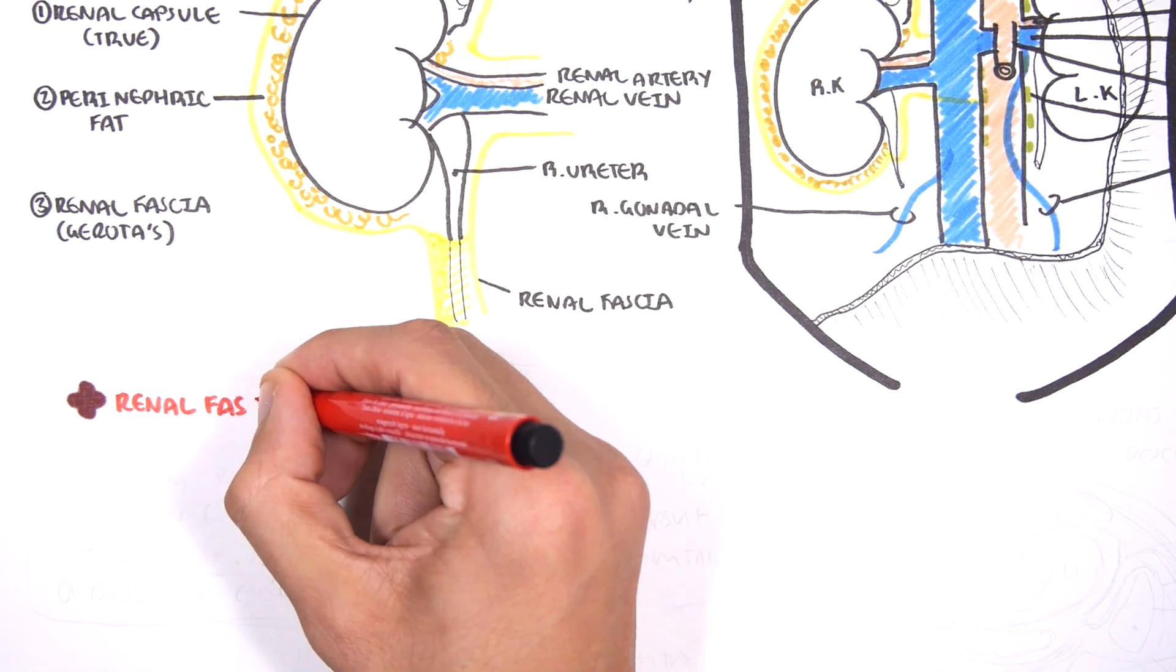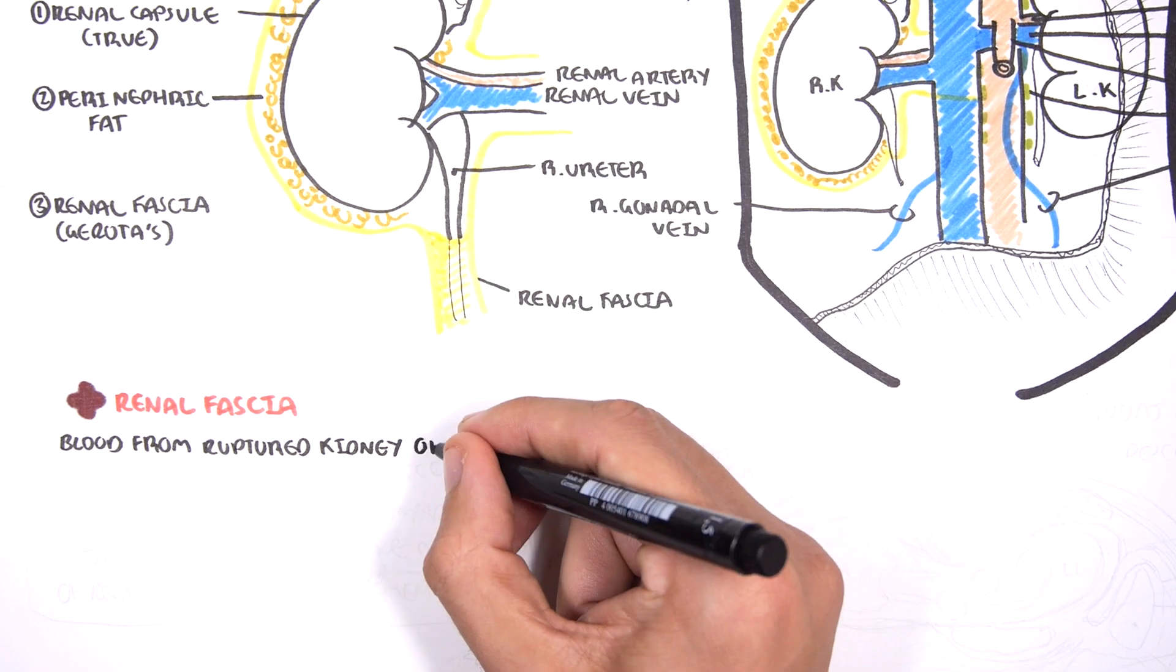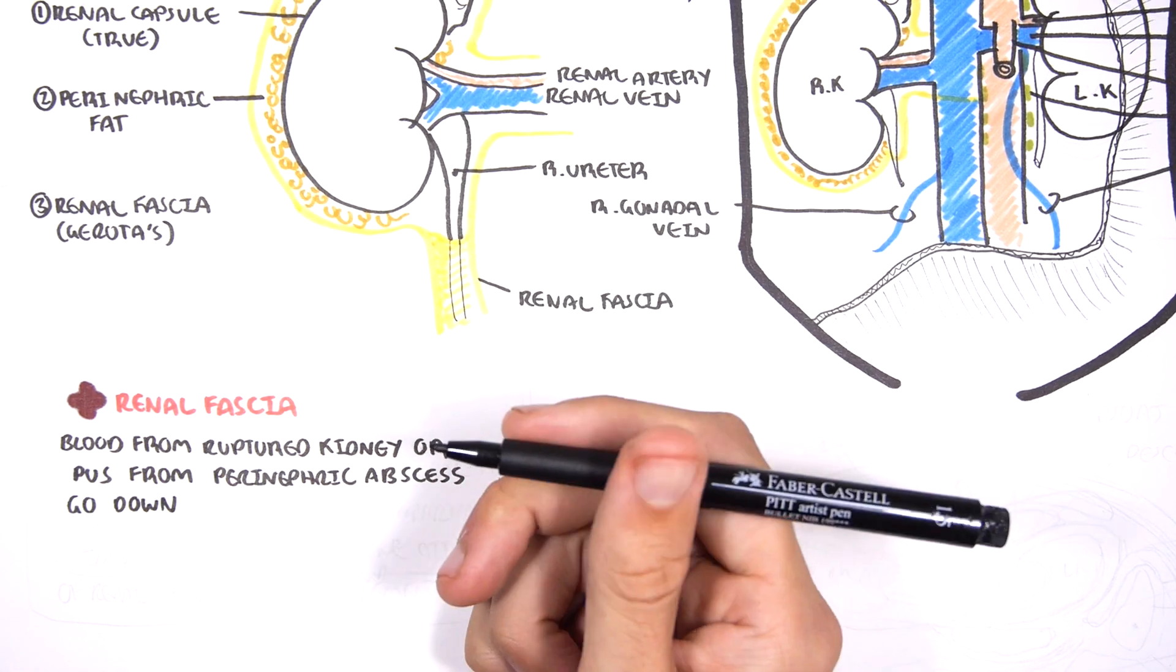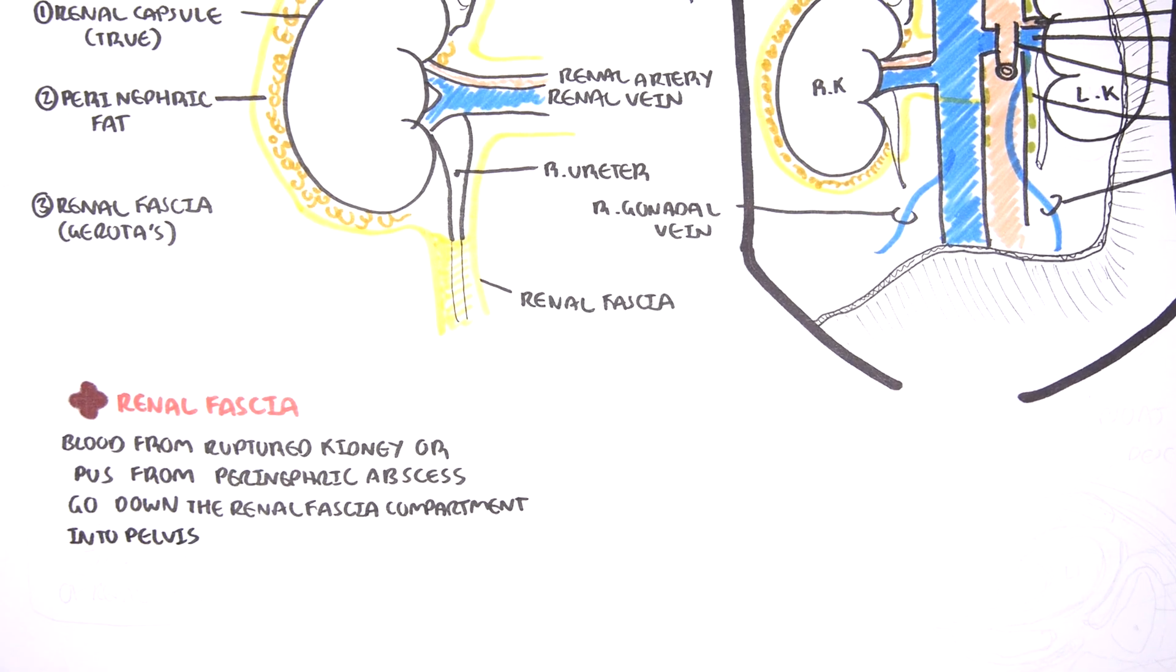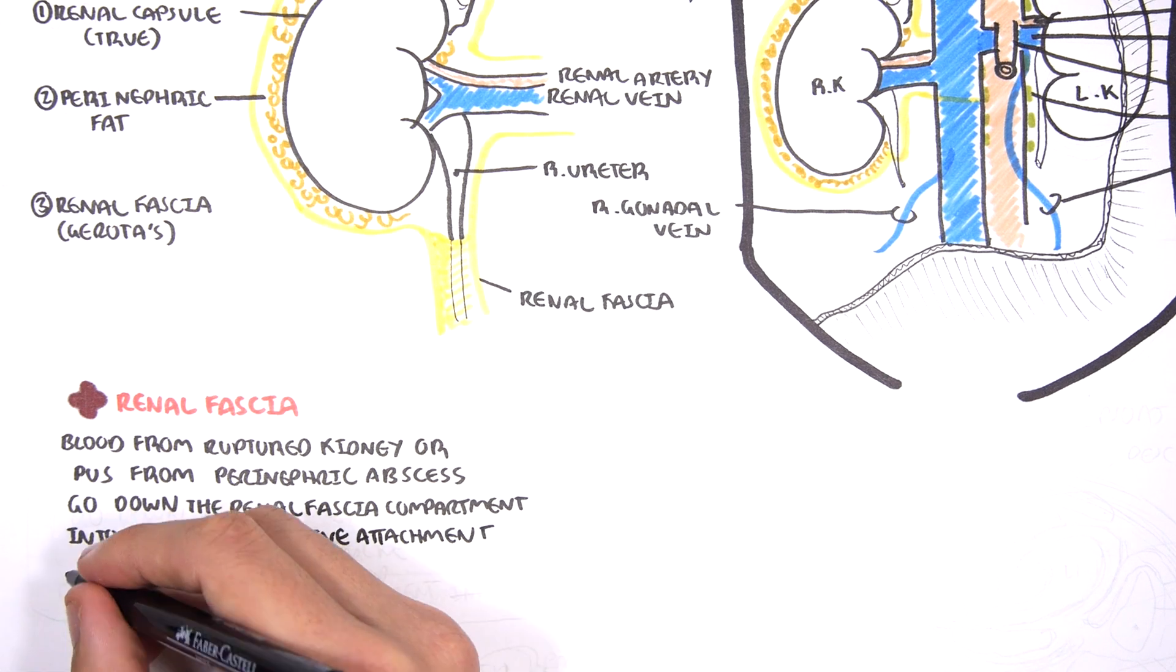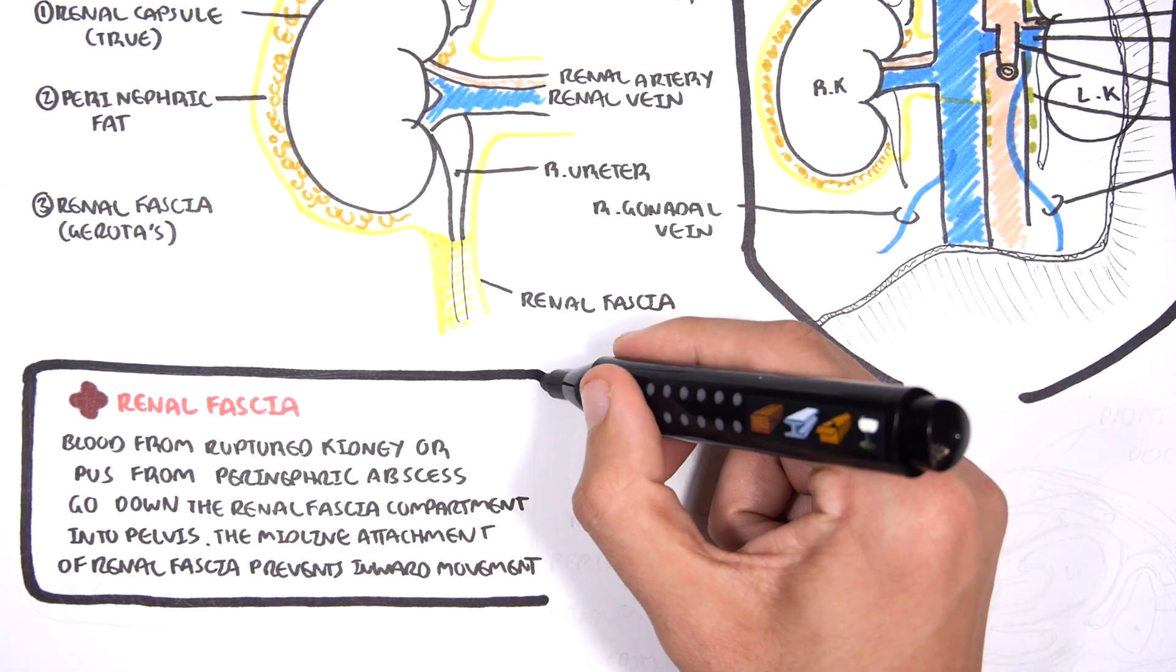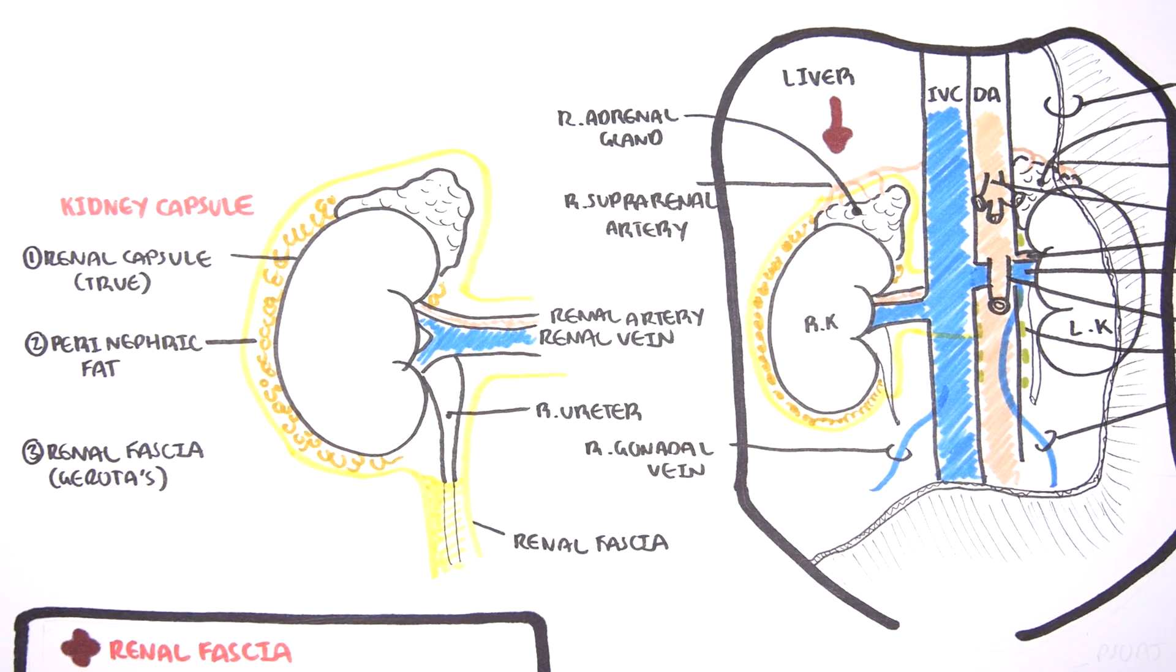So let's look at the clinical anatomy of the renal fascia. Blood for example that ruptures from the kidney or pus from the perinephric fat abscess can go down the renal fascial compartment into the pelvis. The midline attachment of the renal fascia to the large vessels prevents the movement of these collections medially. And so rather than moving medially or sideways the collection will go down towards the pelvis and so can cause pain in the pelvic region for example.